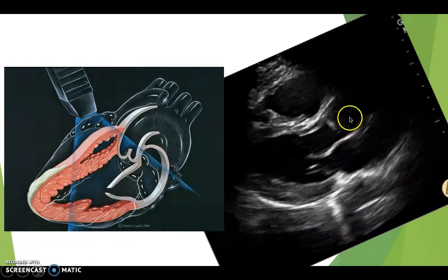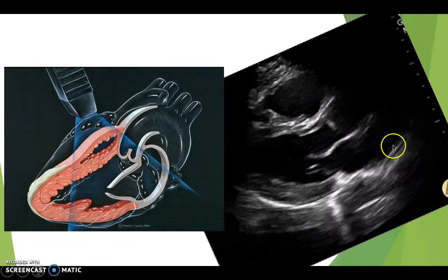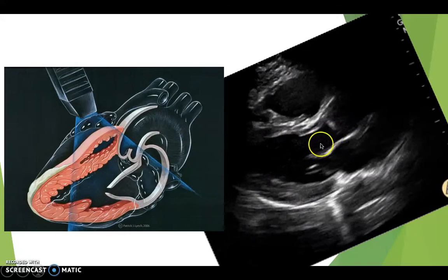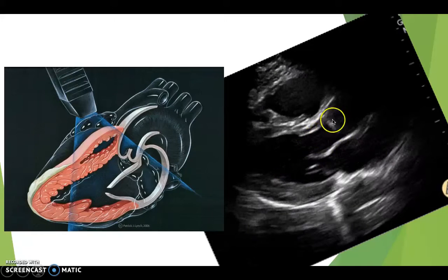When we're looking at an echo it shows up like this — it's exactly the same anatomy. Here's the left atrium, these are the mitral valves, this is the left ventricle, and the aorta would be right around here. And this is the right ventricle.